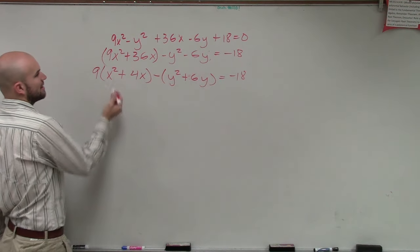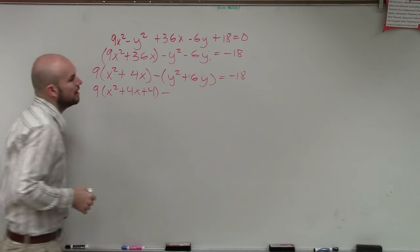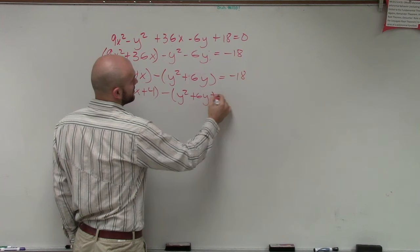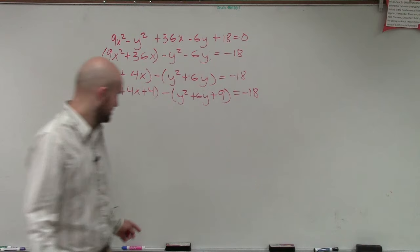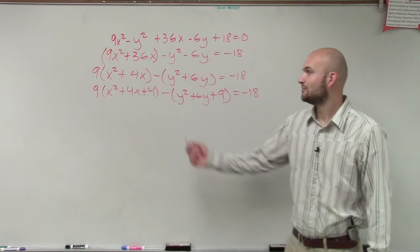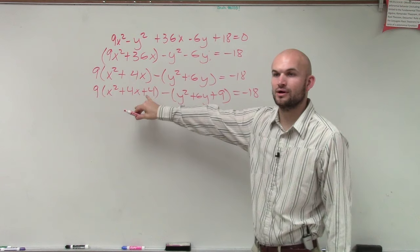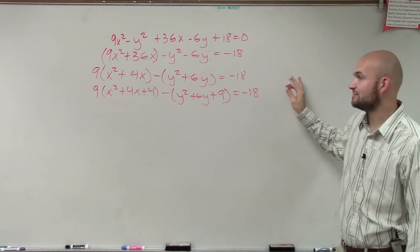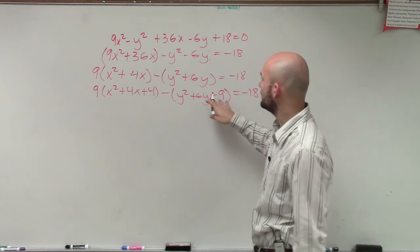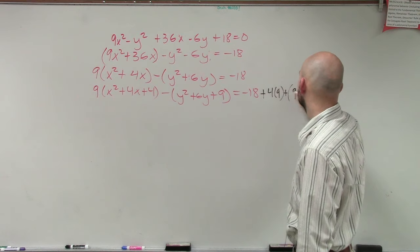Now I can complete the square for each one. So 4 divided by 2 squared is going to be 4. So I have 9 times x squared plus 4x plus 4. Y squared plus 6y — 6 divided by 2 squared is going to add 9 — so it's y squared plus 6y plus 9 equals negative 18. Now remember, whatever you add on the left side, you have to add on the right side. I added a 4 times 9, which is 36, over to this side, and the 9 is being multiplied by negative 1, so I need a 9 times negative 1.